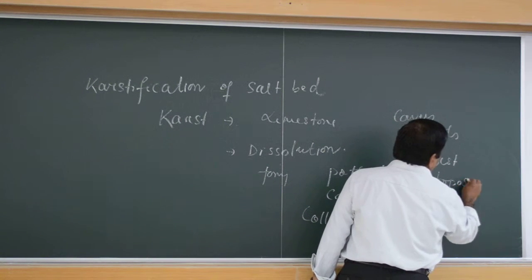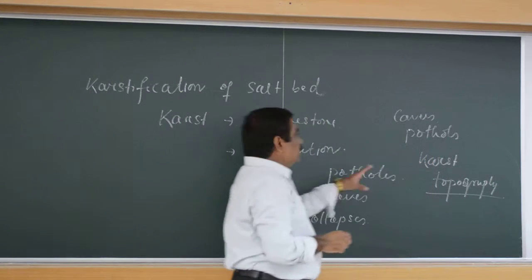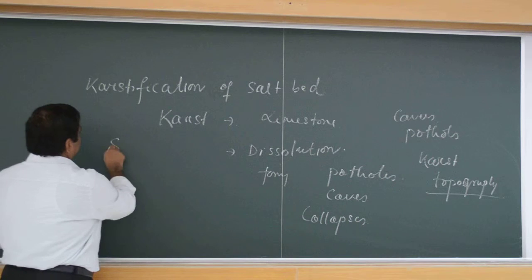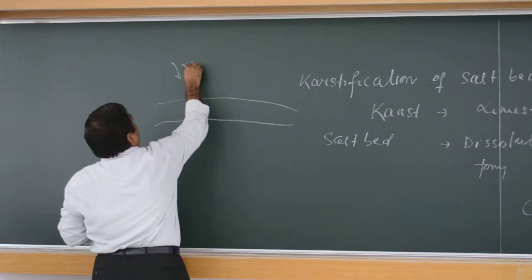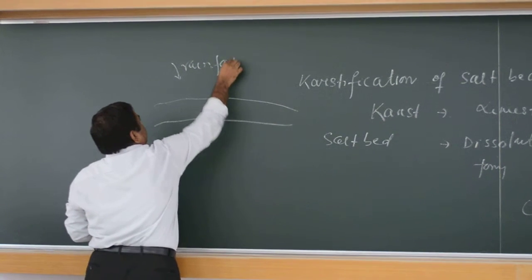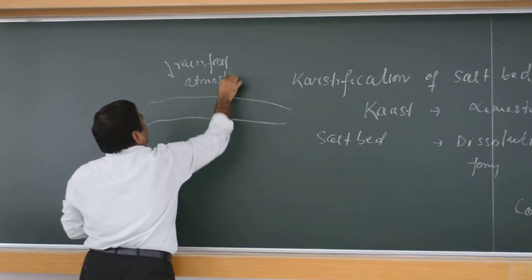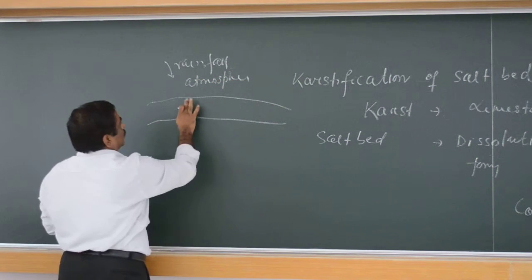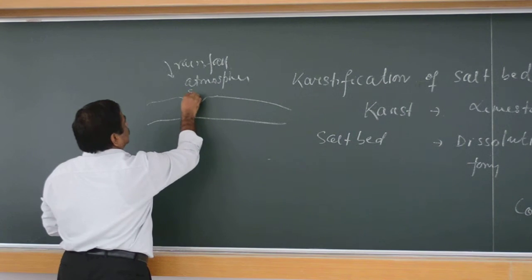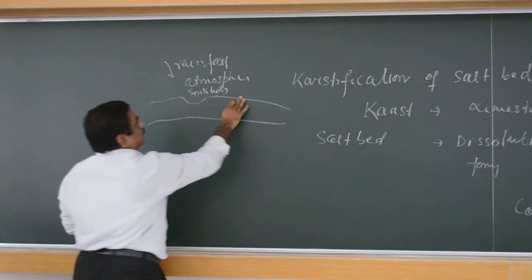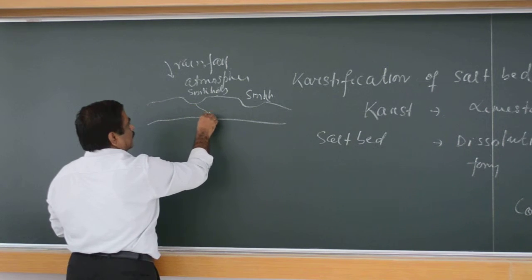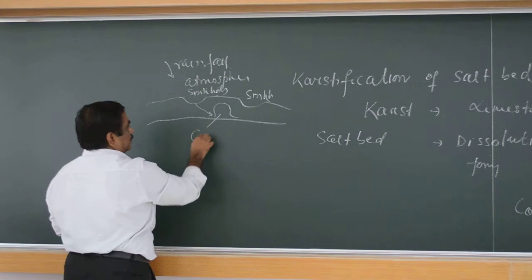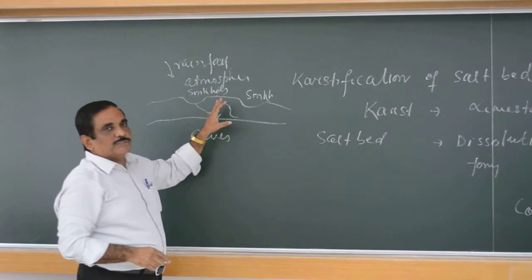The same thing also happens in the case of salt. Because there is a salt sheet like this on the surface, because of rainwater and atmospheric processes, the salt dissolves, forming sinkholes and water holes on the salt bed. Water percolates down, forming caves inside — these are called salt caves.